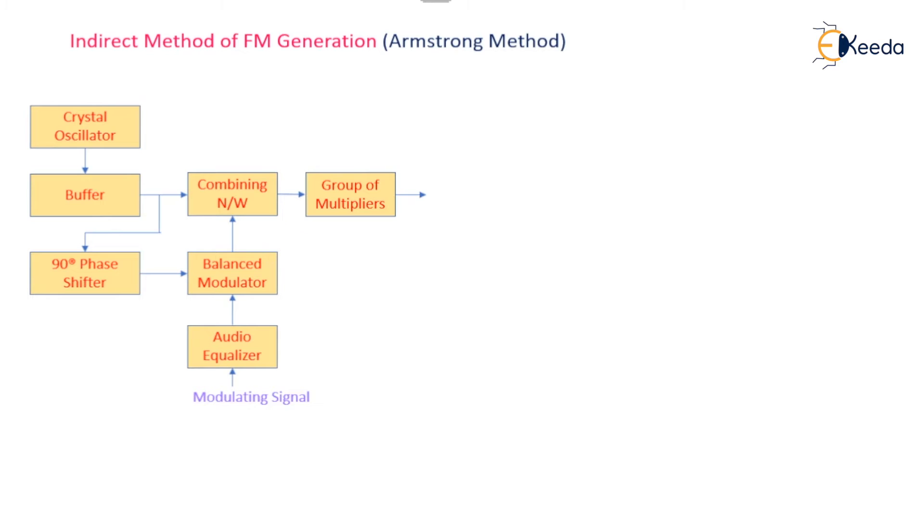A group of multipliers uses the output of the combining network. Basically, the output of the combining network gives us PM, and that will be converted into FM only when we apply the audio equalizer.